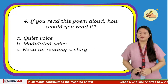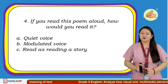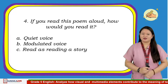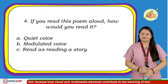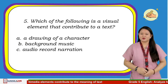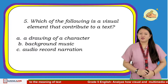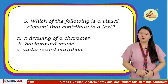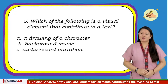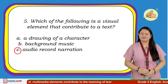Number 4: If you read this poem aloud, how would you read it? A. Quiet voice. B. Modulated voice. C. Read as reading a story. The correct answer is letter B. Last number, number 5: Which of the following is a visual element that contributes to a text? A. A drawing of a character. B. Background music. C. Audio recorded narration. The correct answer is letter A.